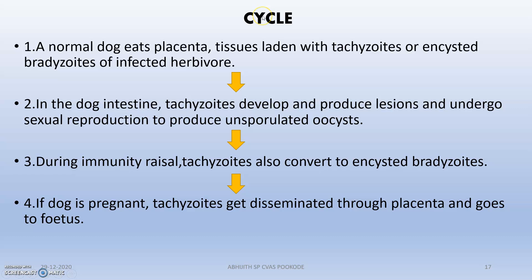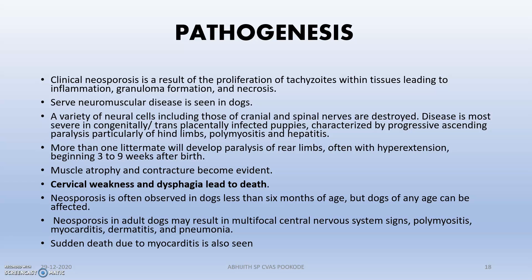In canine neosporosis, a dog eats a placenta or tissue laden with tachyzoites or ingested bradyzoites from an infected herbivore. In the dog's intestine, tachyzoites develop and produce lesions, undergoing sexual reproduction to produce unsporulated oocysts — this only occurs in the intestine of the dog as the final host. If immunity is poor, tachyzoites actively proliferate; if immunity is good, they convert into slowly replicating bradyzoites. If the dog is pregnant, tachyzoites move through the placenta to the fetus. Pathogenesis includes cervical weakness and dysphagia leading to death, and clinical neosporosis results from proliferation of tachyzoites within intestinal tissues.